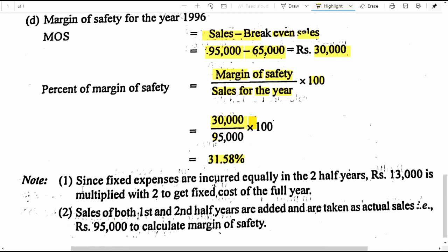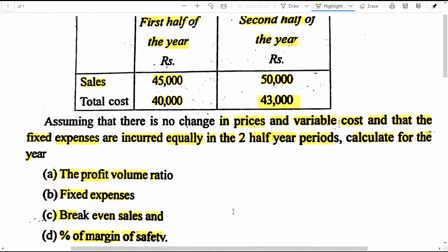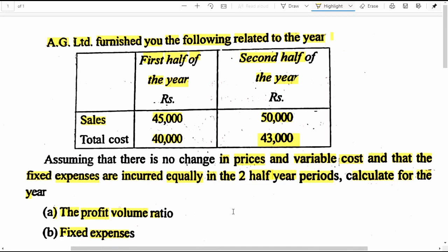The notes below summarize the key points: since the fixed expenses are incurred equally throughout the year, the fixed expenses for one period can be multiplied by two to get the total fixed expenses for the whole year. Also, the total sales for the year is obtained by adding the sales for the first and second half years together, giving 95,000 rupees. I hope I have explained this problem and its solution to your level of understanding. Thanks for your time. I'll meet you in another video. Bye for now everyone.